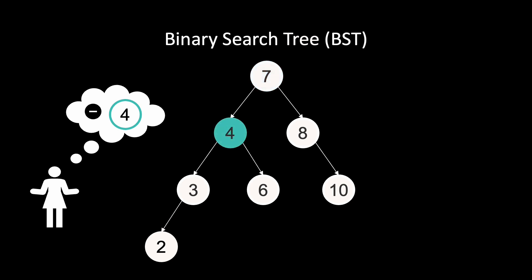As before, we run a search and delete the key. Since this time the key we want to delete is not a leaf node, we cannot simply delete it as the tree would fall apart. In this case, we replace key 4 with a key that does not have any children.